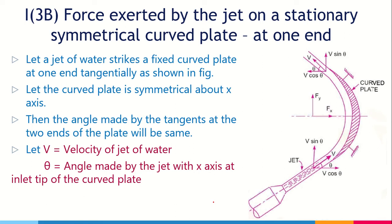Looking at the figure, we have a curved plate here which is fixed. The jet of water comes out of a nozzle and strikes the curved plate at one of the tips or ends — earlier it was at the center. Observing the figure, this is the inlet part of the plate and this is the outlet part.